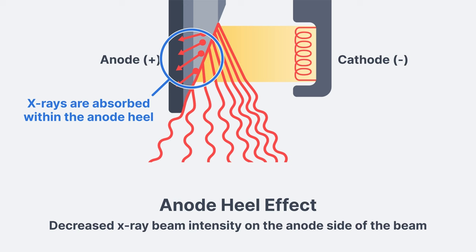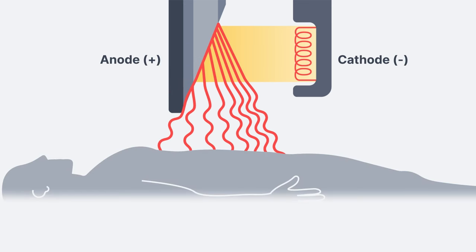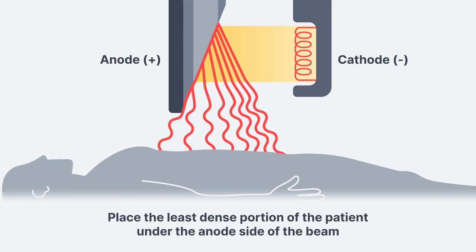Fortunately, the anode heel effect isn't all bad. In fact, if you understand the heel effect, you can actually use it to your advantage. For example, when performing an abdominal x-ray, the upper abdomen is less dense than the lower abdomen because the lower abdomen includes the very dense pelvic bone. If we purposefully place the anode side of the beam over the upper abdomen and the cathode side over the lower abdomen, this allows for more even exposure to the receptor. The high intensity cathode portion of the beam is placed over the densest portion of the patient, and the low intensity anode side is placed over the least dense portion.